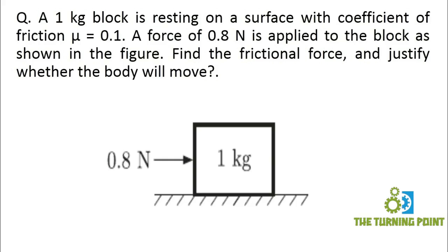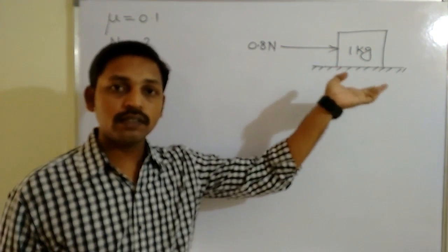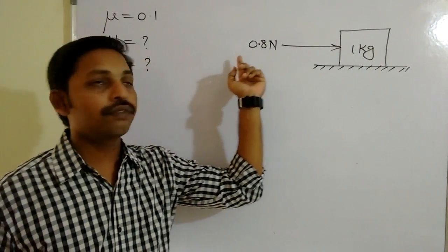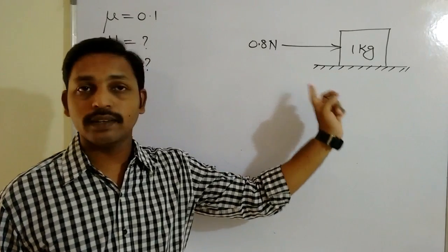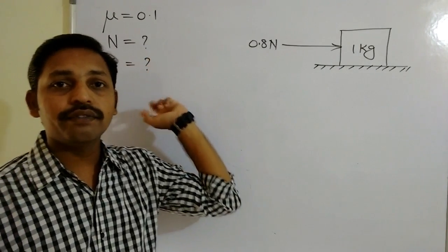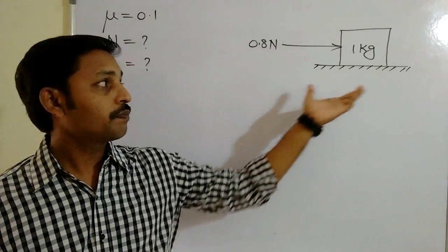Welcome to the Turning Point. In this session, let us solve a problem on friction. A horizontal block of 1 kg weight is resting on a horizontal surface with a coefficient of friction equal to 0.1. A force of 0.8 newtons is applied as shown in the figure. Calculate the normal reaction and frictional force, and justify whether the block is able to move or not.